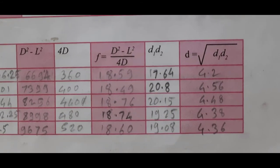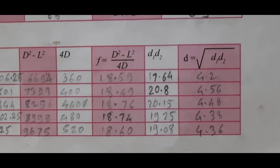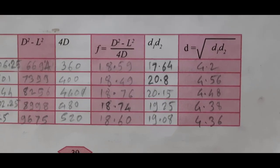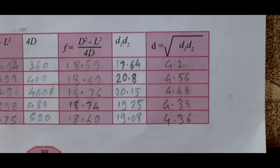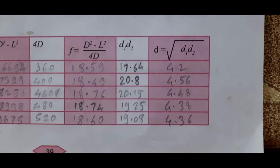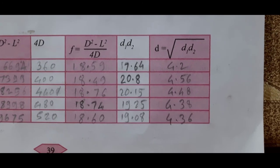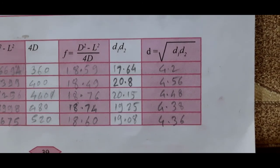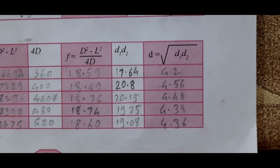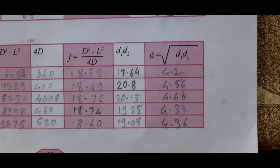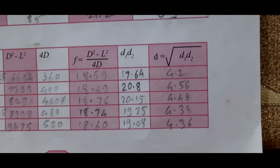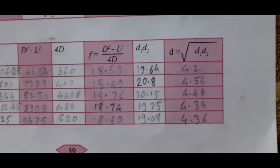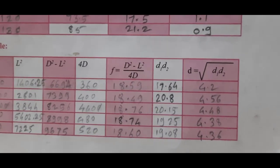The next column is D1 multiplied by D2, where D1 is the size of the magnified image and D2 is the size of the diminished image. This gives five values. The following column is small d — the size of the object — calculated as the square root of D1 times D2. The five values are: 4.2, 4.56, 4.48, 4.38, and 4.36. We add these five values and divide by 5 to get the mean size of the object.